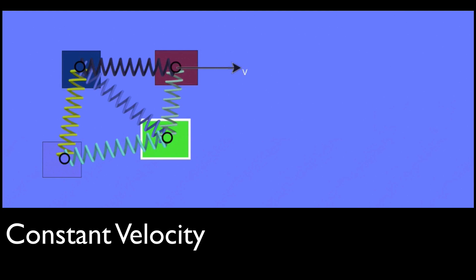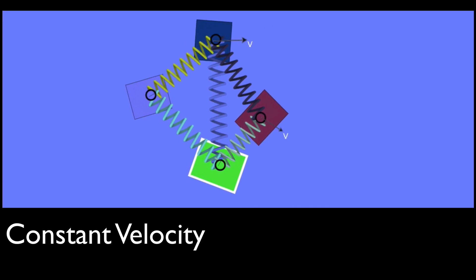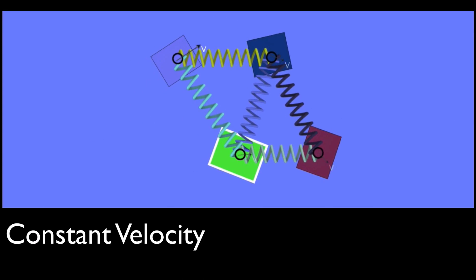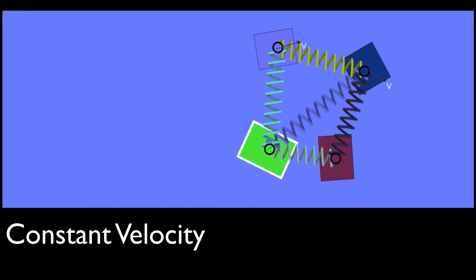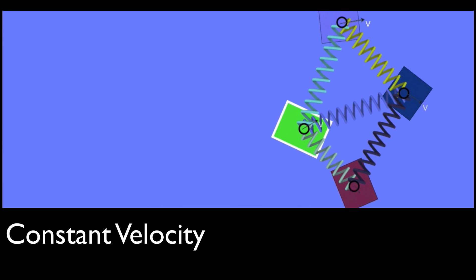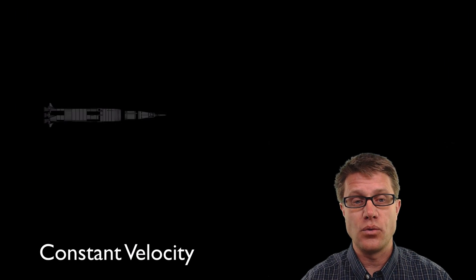We could do an even more complex system with four objects connected together with springs. Try to hold your finger where the center of mass is — between all four objects. It is hard to keep it in between all four, but your brain is pretty good at this. There is crazy motion on the screen, but your finger is moving across with constant velocity, because there is no external force.